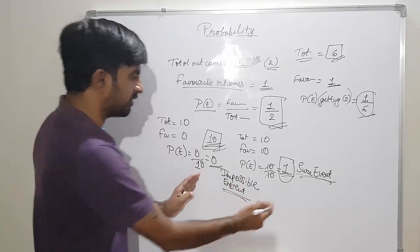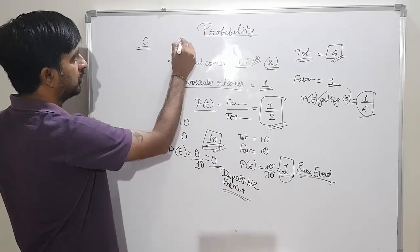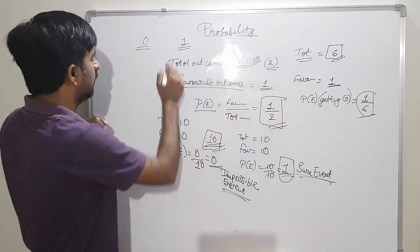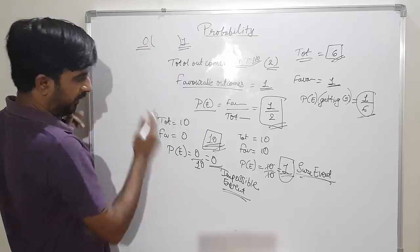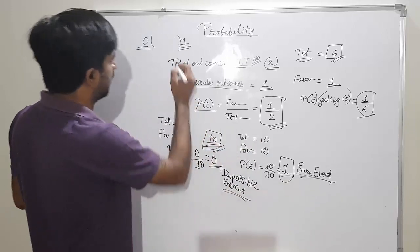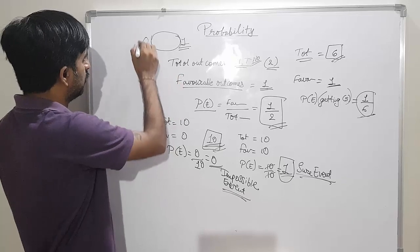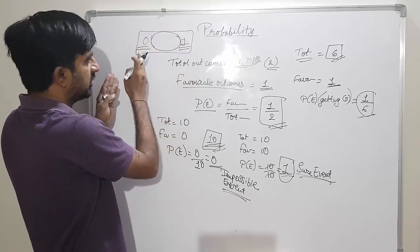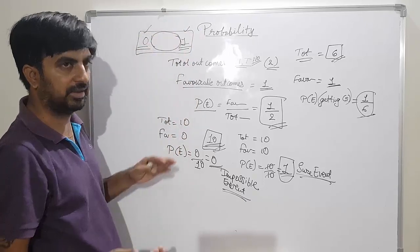So everything is about between sure and impossible. Impossible means zero, sure means one. All probability answers will be between zero and one. Impossible event gives zero, sure event gives one, and all other answers will be between these two. So your answer will always be between zero and one only.